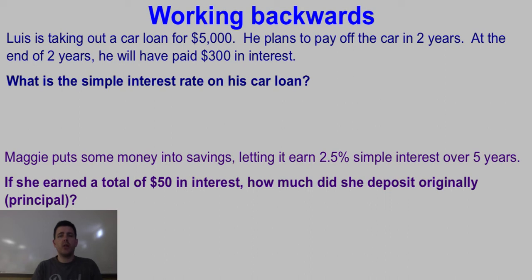A little bit here at the end, what if we don't know one of those initial pieces of information? We always have our I equals PRT, but what if we don't know the principal, the rate, or the time, and we've got to figure one of them out? Jot down these two problems for me, and then let's try them together.